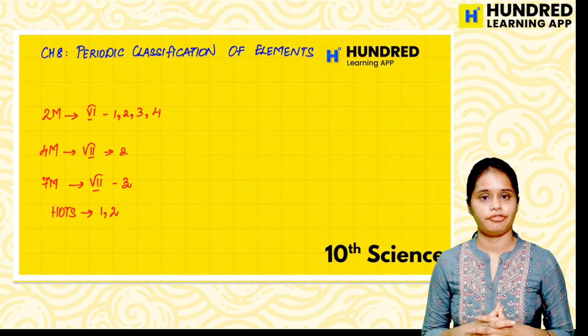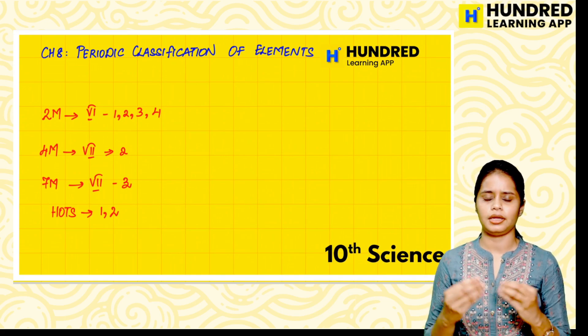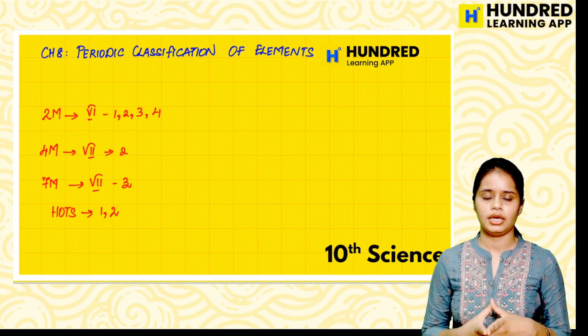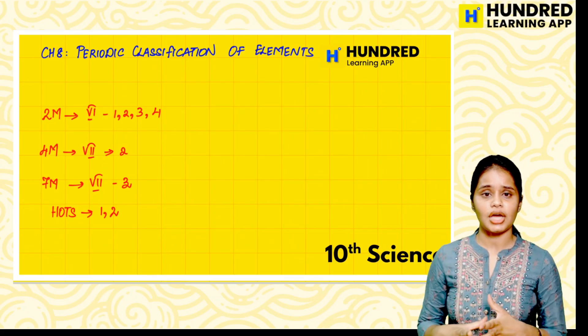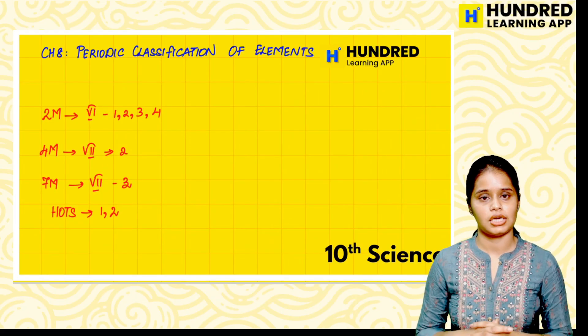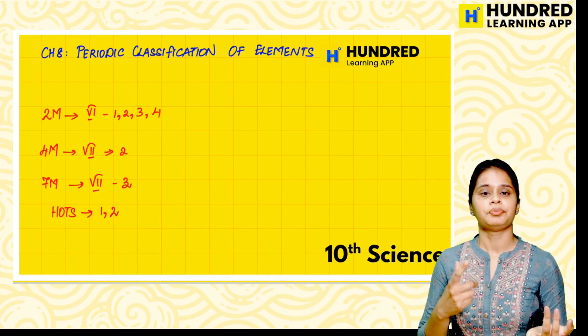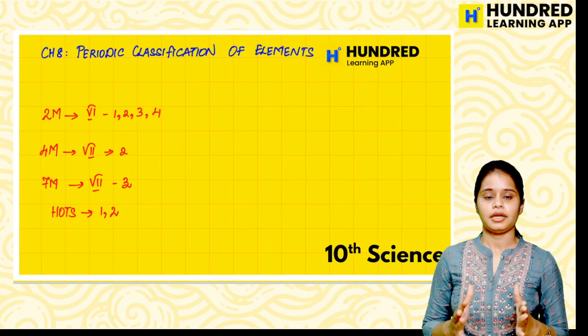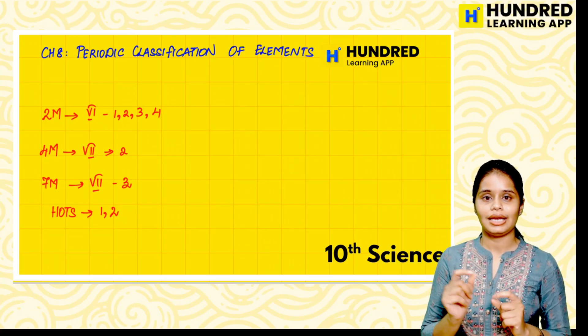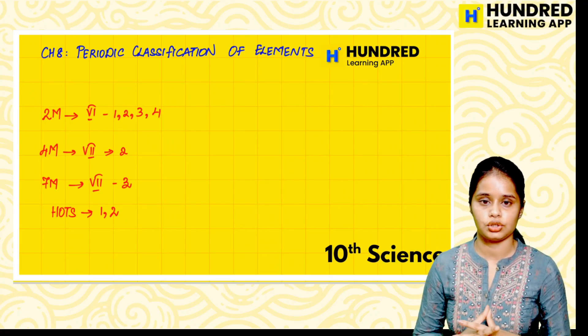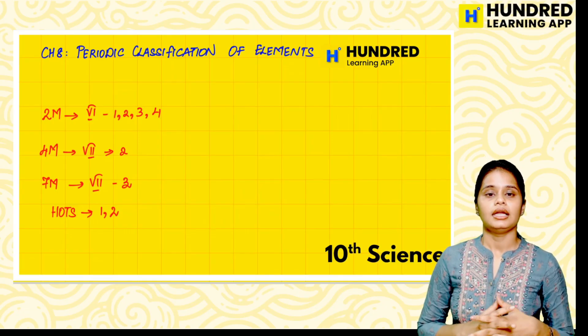Your first chapter is periodic classification of elements. If we come here, we don't have any problems. In this chapter, what are the creative questions? What is Amalgam, Uses of Copper - we can expect these questions.